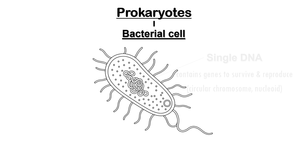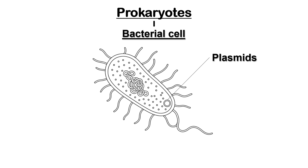Some bacteria also contain small additional rings of DNA called plasmids. These carry extra genes, such as those for antibiotic resistance. The bacteria don't use these genes all the time, but they can be very useful in certain conditions.